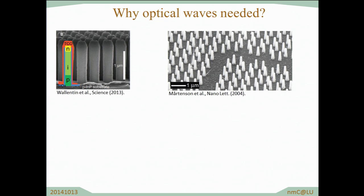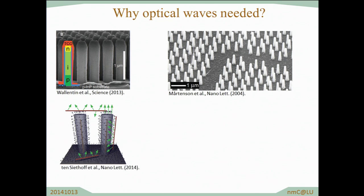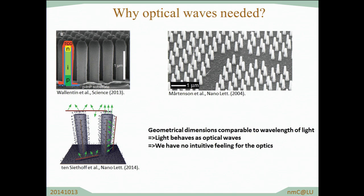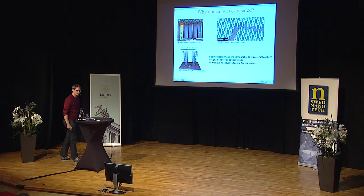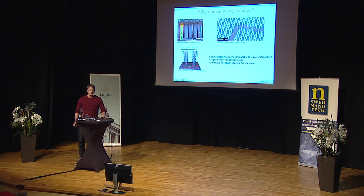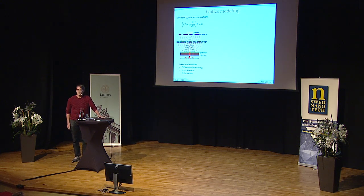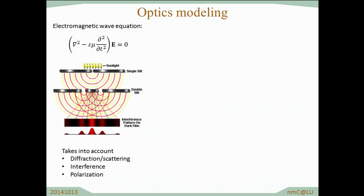We can go a step further and actually create streets for these optical waves, or we can use these nanowires as optical waveguides for biosensing. What is common in all these applications is that the geometrical dimensions of these nanowires are comparable to the wavelength of light. In this case we have no intuitive feeling for what happens with the optics, and this is where optics modeling comes in.